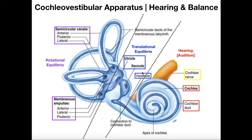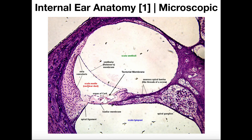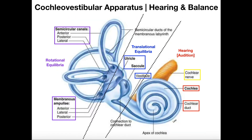The same distinction applies to the cochlea. If we look at the bony part on the outside, that's the cochlea. But there is also ductwork inside the cochlea — this would be the cochlear duct, which we'll look at in more detail in the following video.